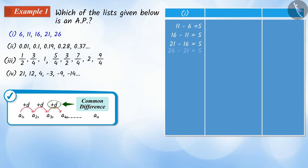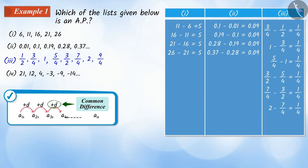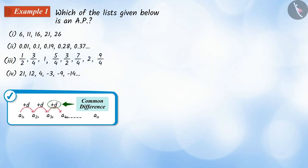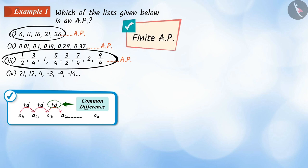If we look at the first, the second, and the third list here, for each of them, we get the same difference between every two consecutive terms. Hence, these three lists are an AP, where the first and the third are finite APs and the second is an infinite AP.